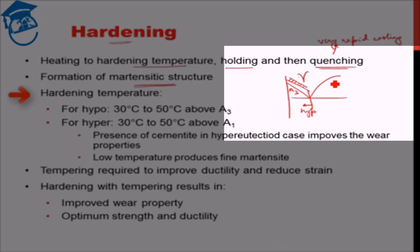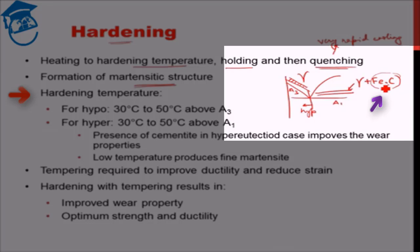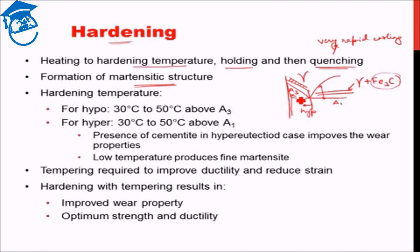For hyper-eutectoid steel, we do not need to go above Acm — it is sufficient to go above A1. At that temperature we are forming austenite plus cementite. Austenite is itself a very hard phase, so the cementite present in the martensite does not reduce the strength of the material. In contrast, for hypo-eutectoid steel in the intermediate range, alpha ferrite phase would form, which is undesirable — it softens the material and since ferrite cannot convert to martensite, it remains in the final microstructure, causing a drastic drop in strength.